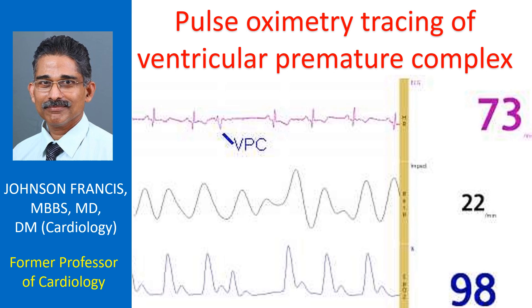The middle tracing shows the variation in thoracic impedance with a respiratory rate of 22 per minute. Lower tracing is the pulse oximetry tracing and the oxygen saturation is displayed as 98% in dark blue.